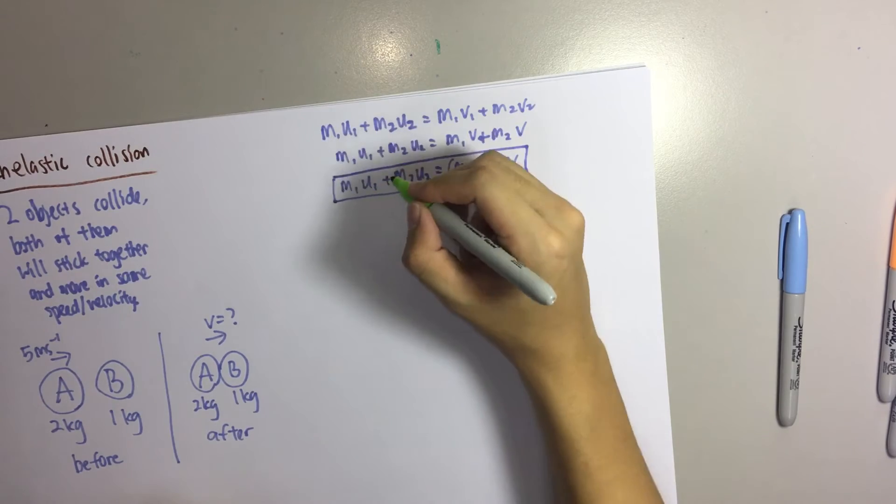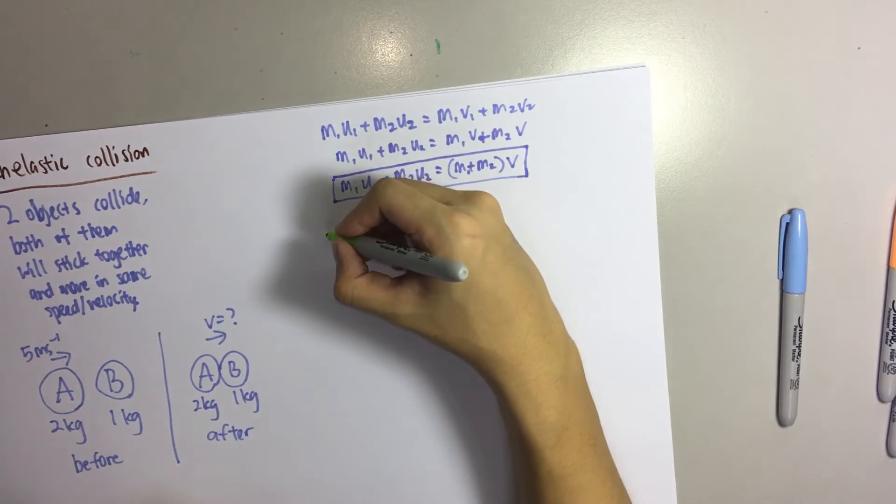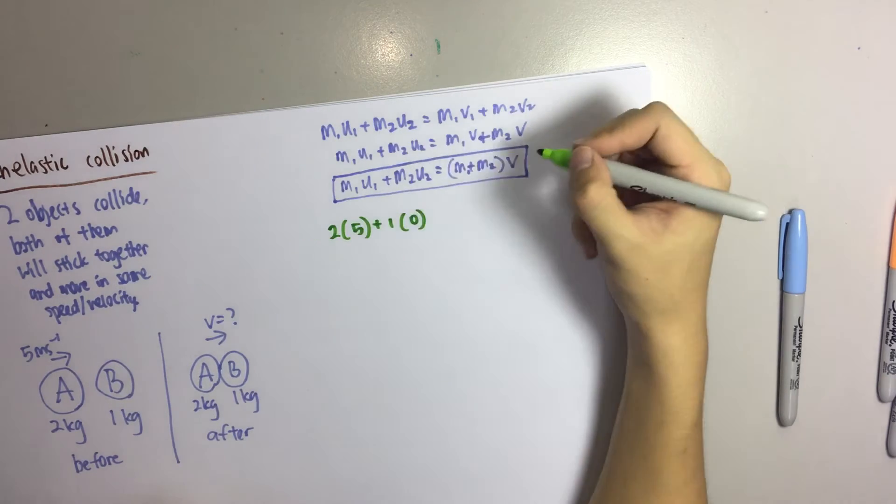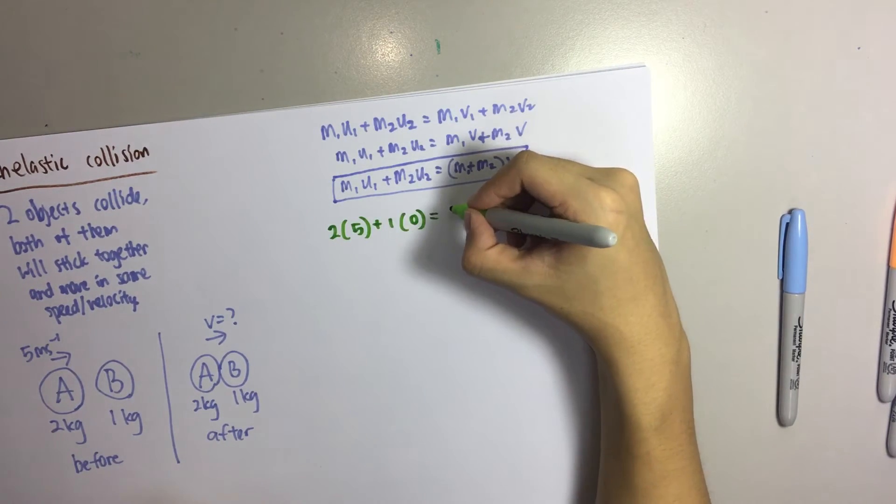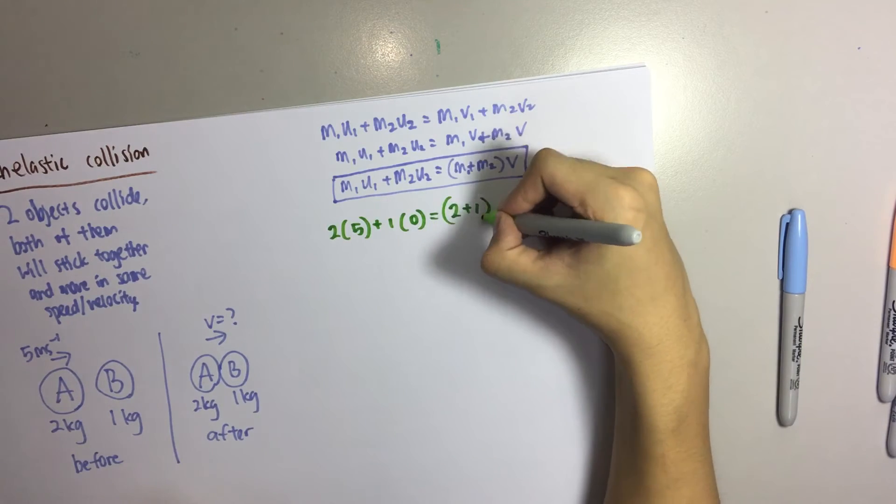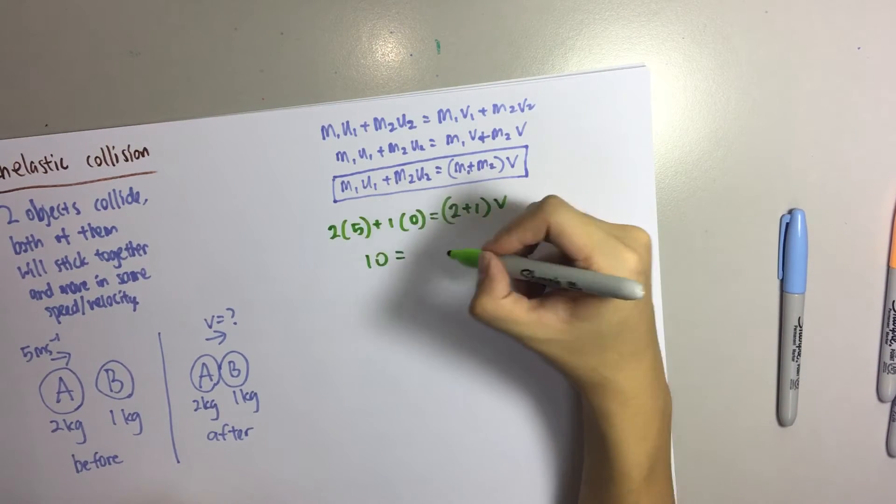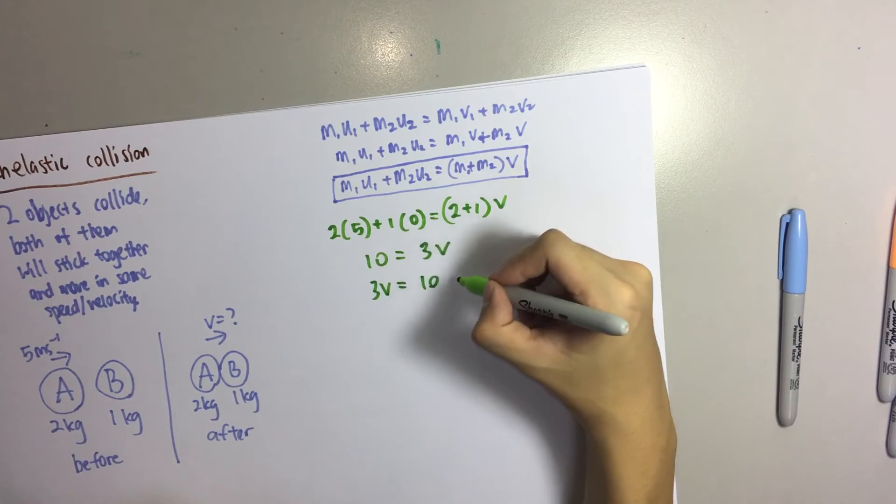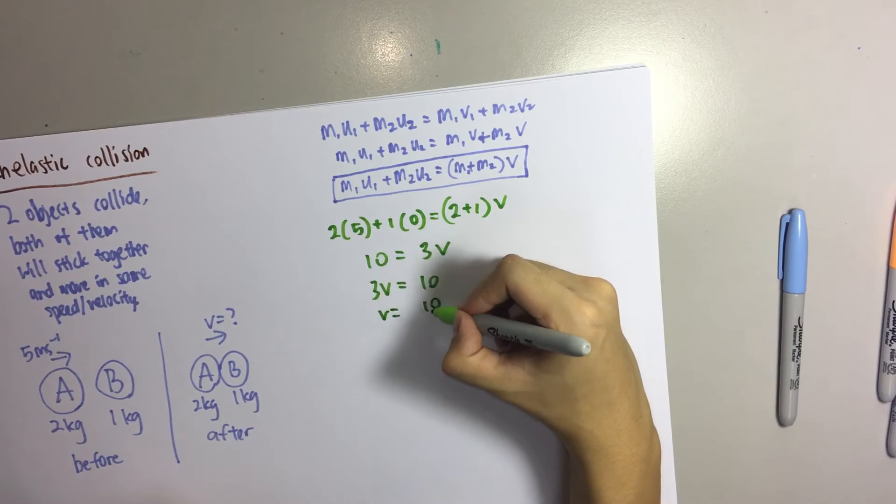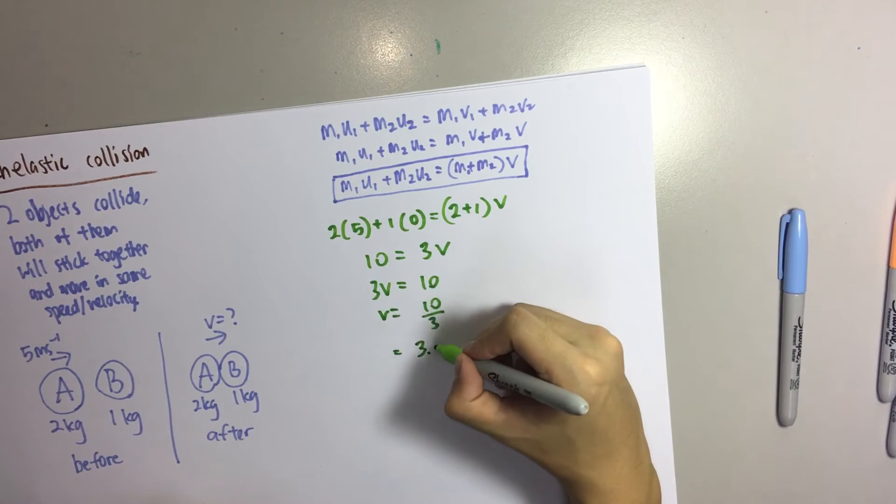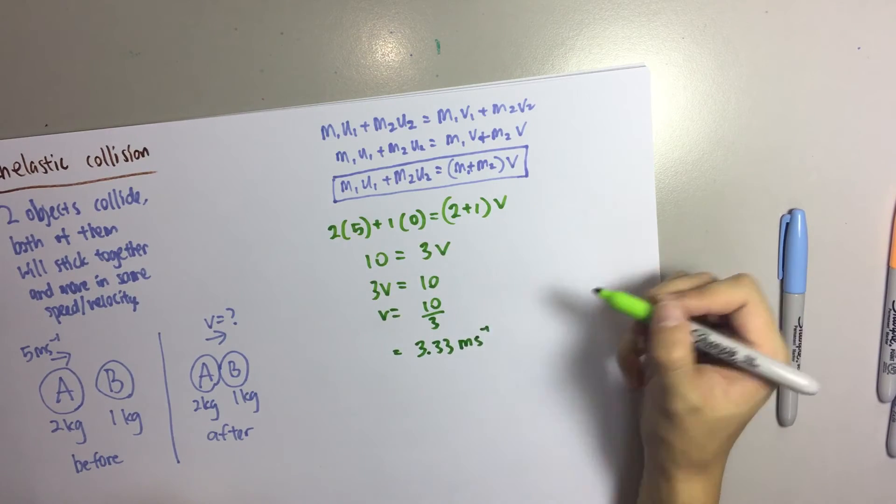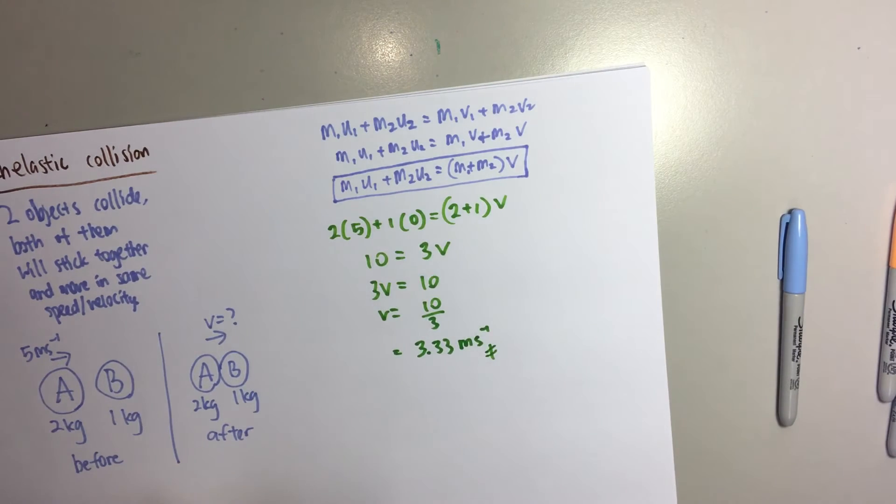Before collision it will be... So 10 equals to 3V. This will be the answer. The answer for the speed of both object A and B after they have collided.